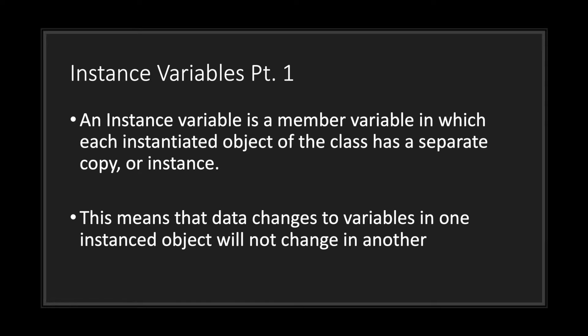An instance variable is a member variable in which each instantiated object of the class has a separate copy or instance. This means that data changes to one variable in one instance object will not change another variable in another instance object.